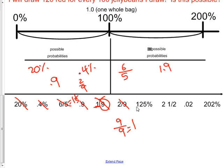125% is greater than 100%, which we know is not possible. So that is going to go in the impossible probabilities. 2 and 1 half is clearly more than one whole. So that also is impossible as a probability. 2 hundredths is greater than 0 and less than 1.0 or one whole. So that is possible. And 202% is greater than 100%. So that is impossible.